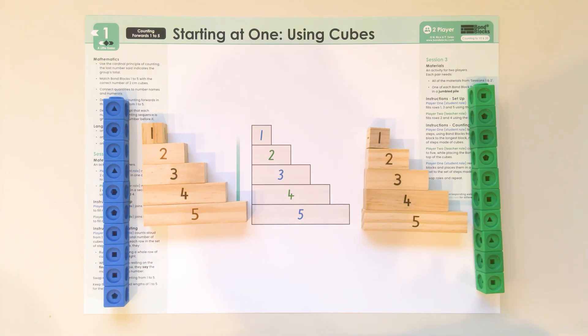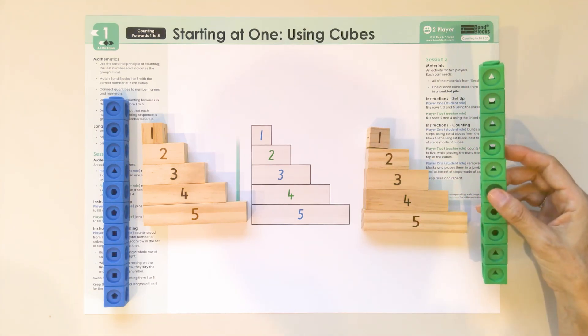Welcome to Activity 1, Session 3, A Little Easier. In this activity we're going to be counting from 1 to 5. We each need a set of steps of the blocks from 1 to 5 and approximately 10 cubes.